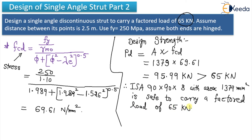So this was the video on design of single angle strut, Part 2. We tried two sections — the first section 75×75×6 was failed, so we tried another section 90×90×8, and it is safe against the given load of 65 kN. Thank you.